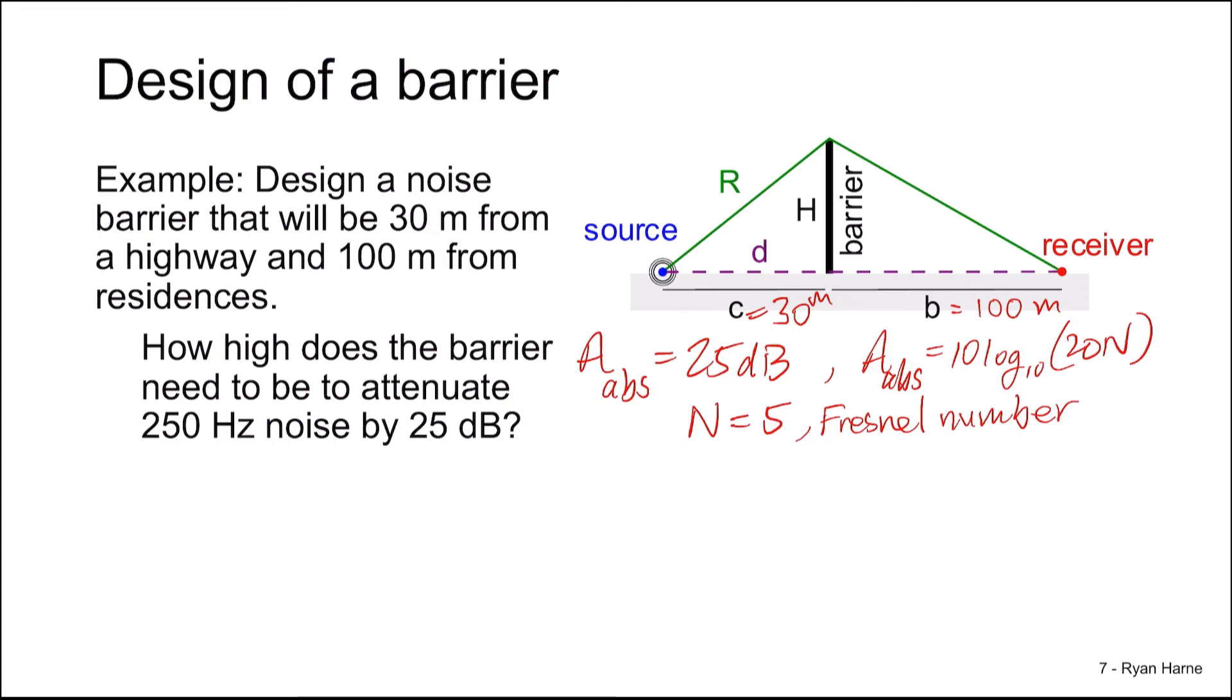D, the distance between the source and receiver in this case, is just the sum of C and B. It's 130 meters. Our wavelength is 2 pi on K. And if we substitute in the equation for omega, we find that this equation is the same thing as C on F. Running the numbers, we find that the wavelength is 1.37 meters.